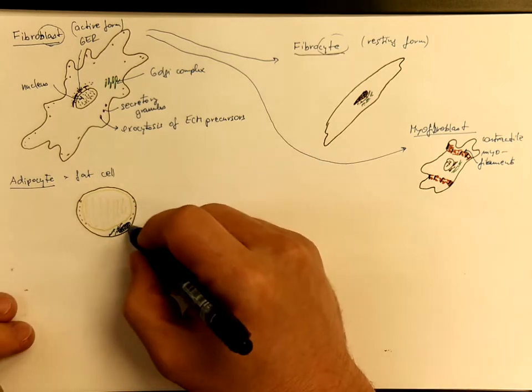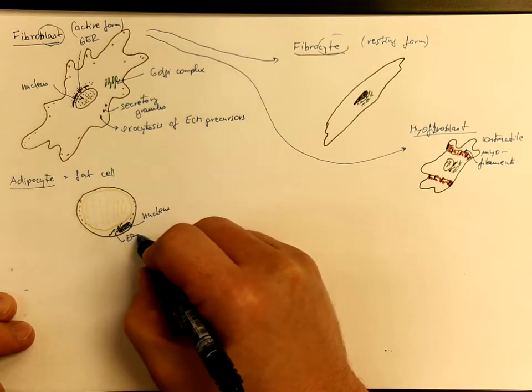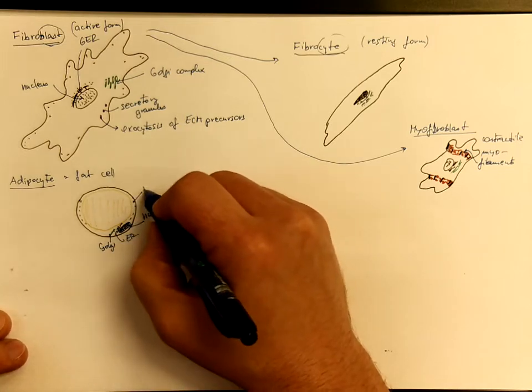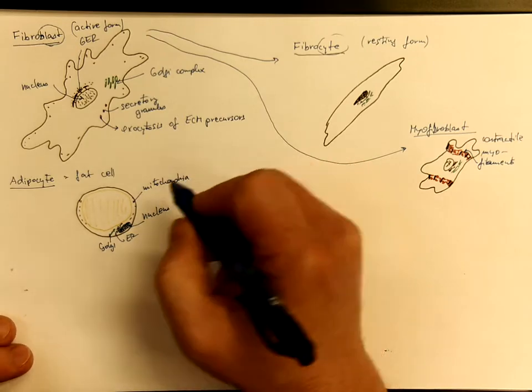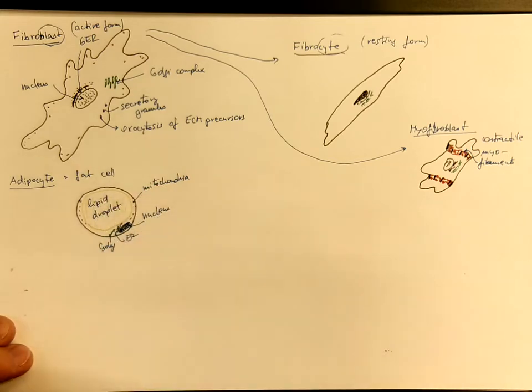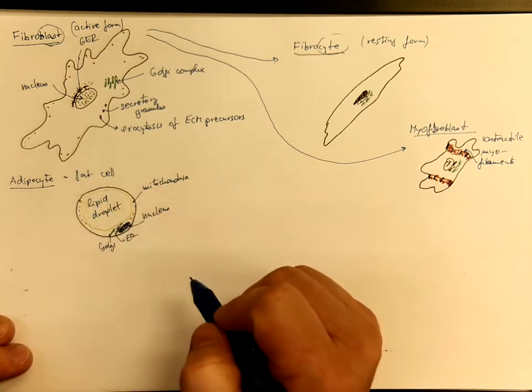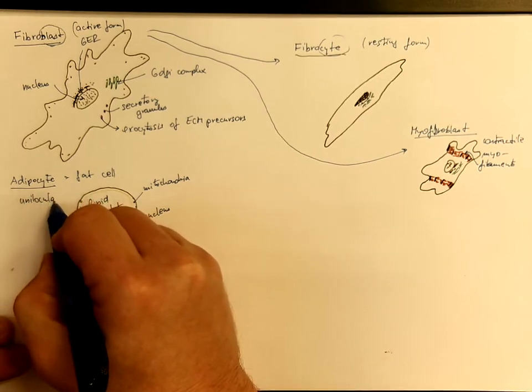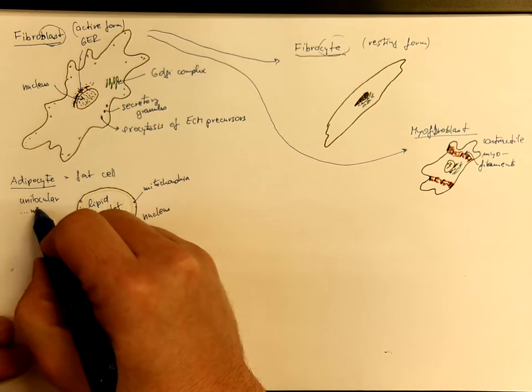So we have the nucleus on the periphery, endoplasmic reticulum and the Golgi complex, and mitochondria. However, there is a huge lipid droplet filling most of the cell. You call this type unilocular adipocyte, and it occurs in white adipose tissue.